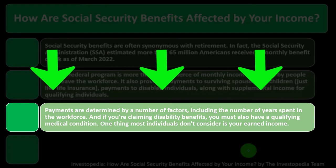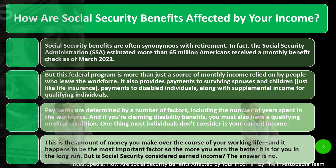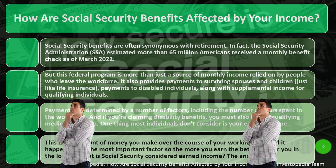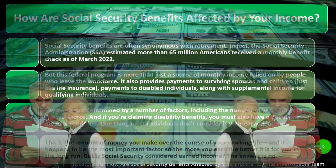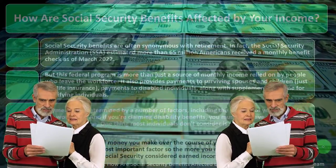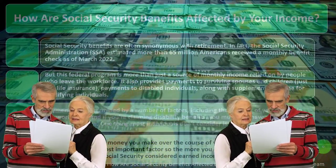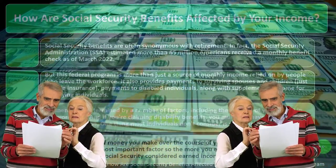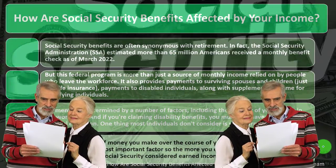Payments are determined by a number of factors including the number of years spent in the workforce, your earnings, and if claiming disability benefits, you must also have a qualifying medical condition. One thing most individuals don't consider is earned income. If you think of Social Security as a retirement plan, the more money you put in the more benefit you should get. If you think of it as a welfare program, it's needs-based. Social Security is kind of in between — a progressive benefit program.